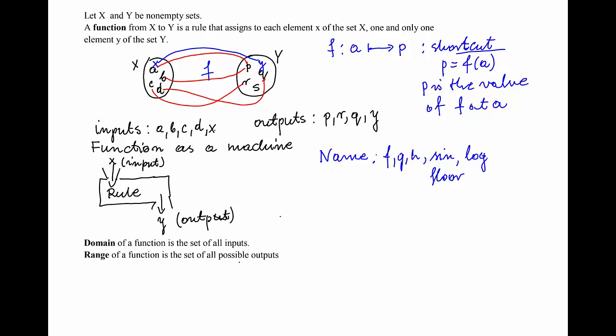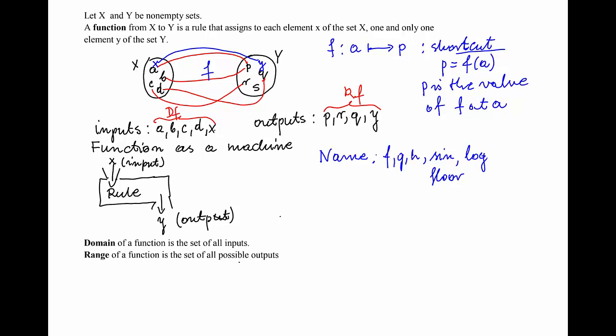One more definition: the definition of domain and range. The domain of the function is the set of all inputs, and the range of the function is the set of all possible outputs. So using the inputs listed in this original example, this is the domain. We'll shortly write the domain of the function as the set consisting of elements p, r, q and y — this is the range of the function, so we'll shortly write it as R of f.